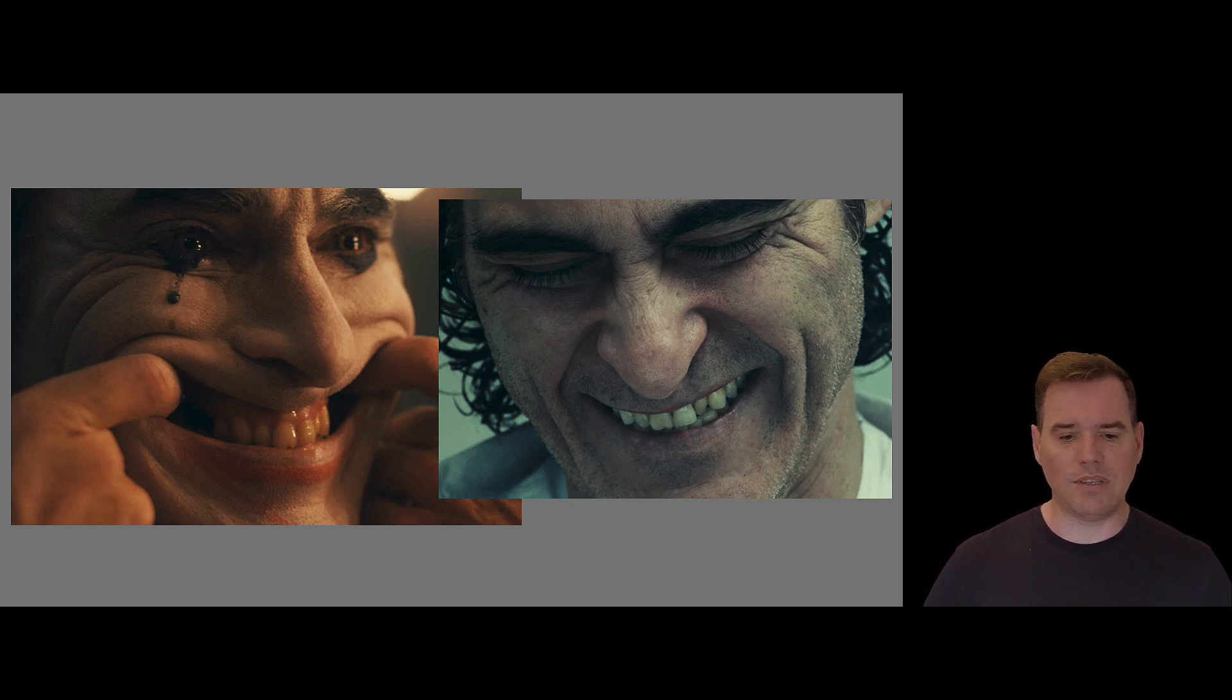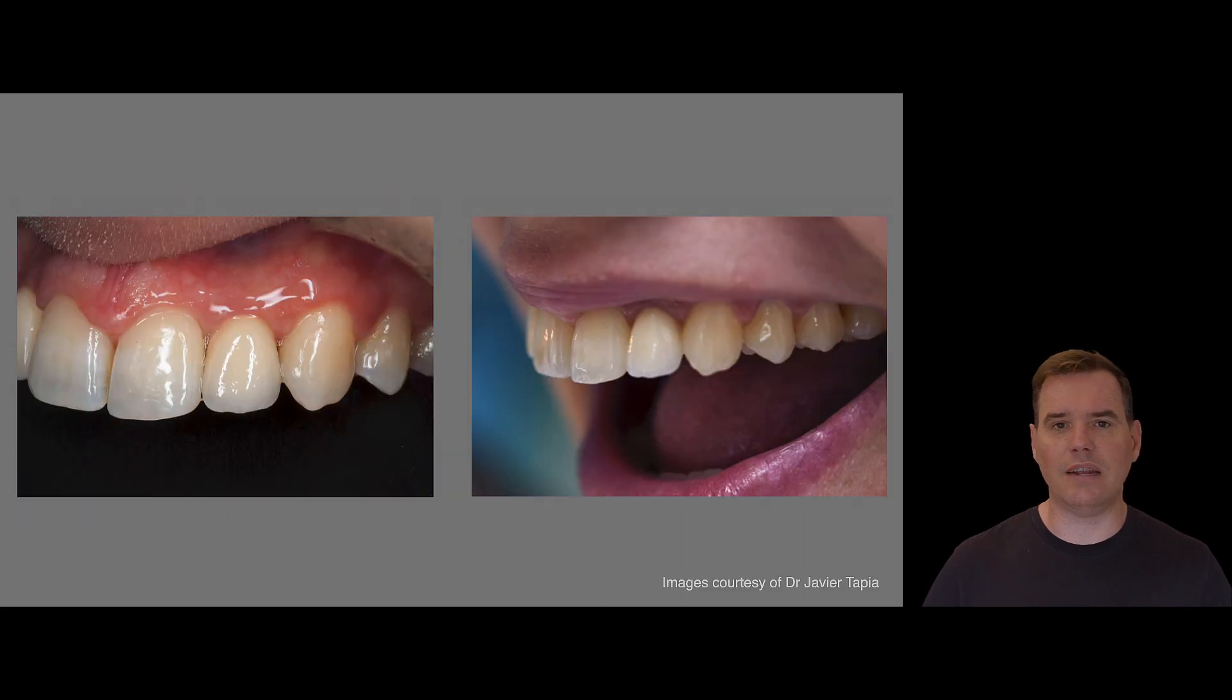So metamerism is something that you can observe in clinical reality quite often. It's not unusual that a crown can match to the adjacent natural teeth quite nicely under one viewing condition, but not when this has changed, as you can see in these two images here, which have been provided to me by Javier Tapia from Madrid.